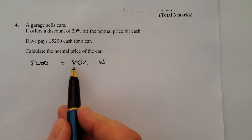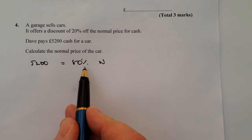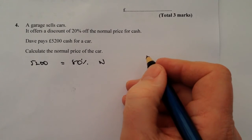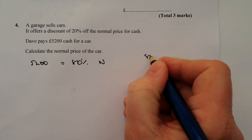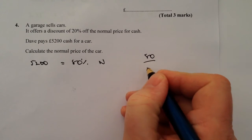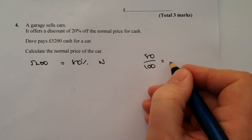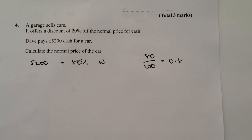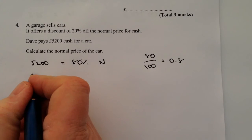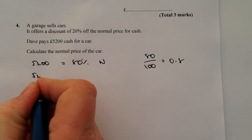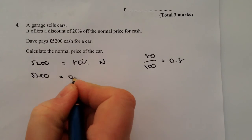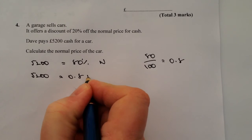We can't divide through by 80%, but that 80% is exactly the same as saying 80 over 100, which is 0.8, because we've moved the decimal point two places. So I'm going to rewrite that particular equation as 5,200 equals 0.8N.